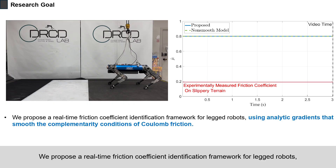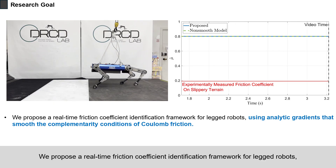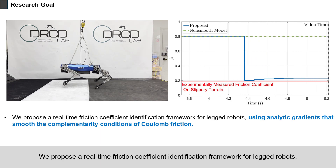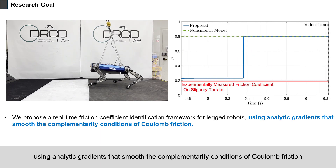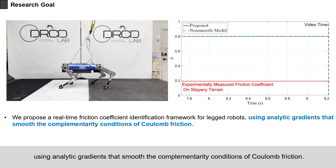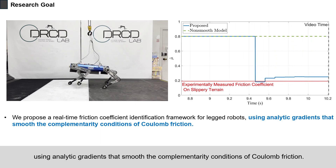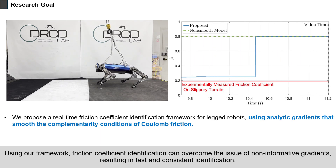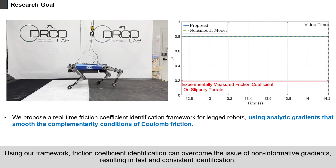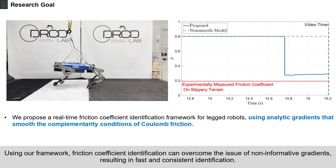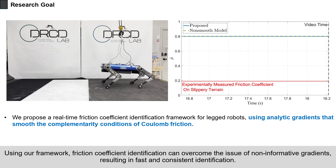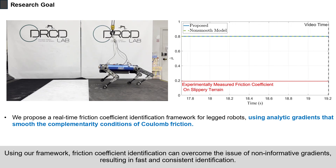We propose a real-time friction coefficient identification framework for legged robots, using analytic gradients that smooth the complementarity conditions of Coulomb friction. Using our framework, friction coefficient identification can overcome the issue of non-informative gradients, resulting in fast and consistent identification.